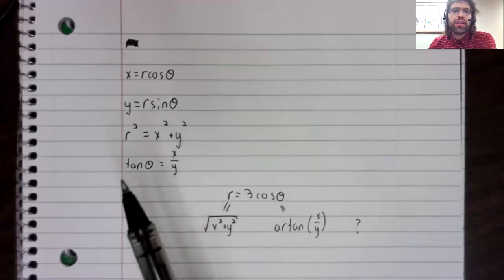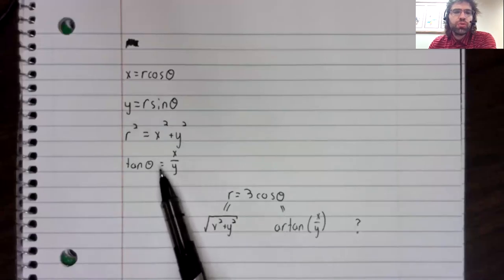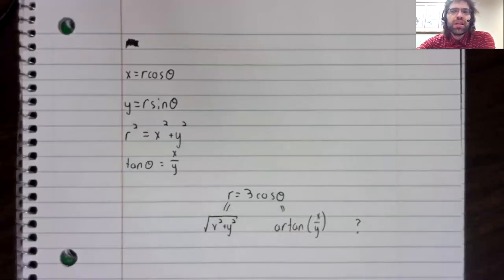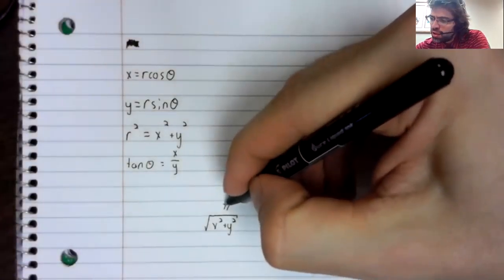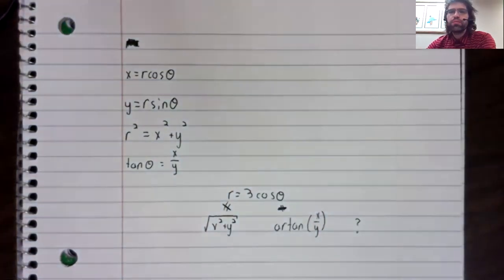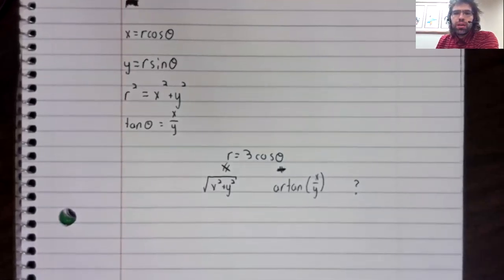Likewise, this equality is true. But this only tells us that theta equals the arc tangent if we know that theta is between negative pi over two and positive pi over two. So this is not a valid way of approaching this problem.